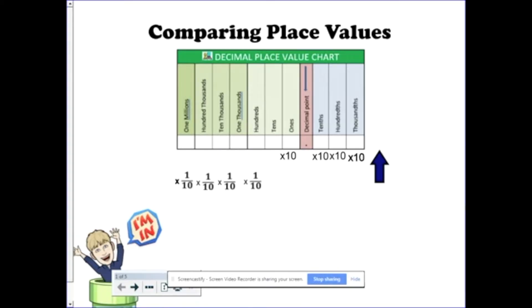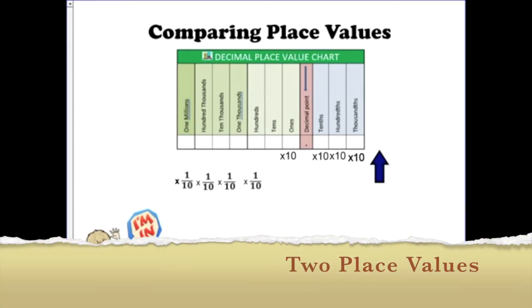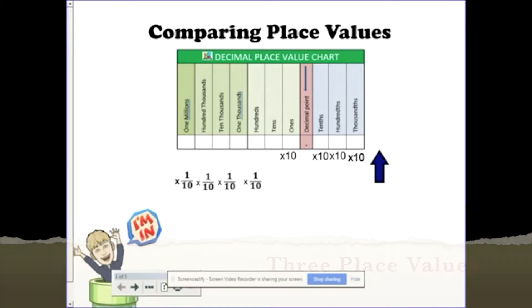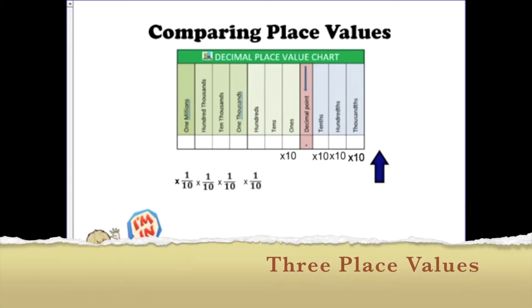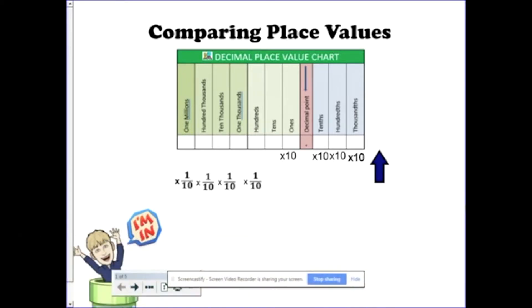This concept will be extended for when the place values are 2 spaces apart or even 3 spaces apart. It's important to note that the digits I'm using for examples are irrelevant. We are only looking at the relationships between the place values. It could be a 4, it could be a 7, it could be any digit because we're only looking at the relationship between the place values.